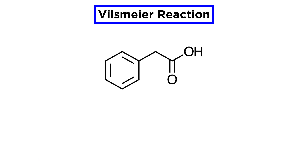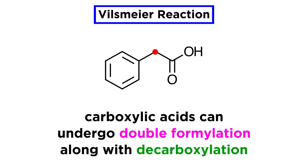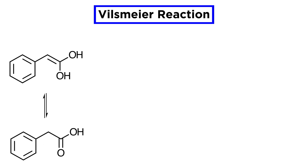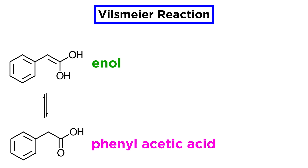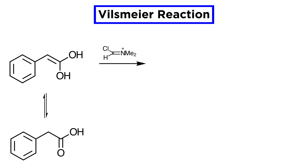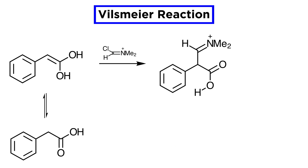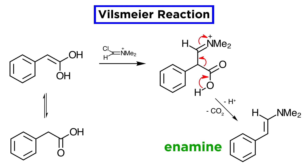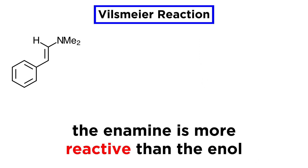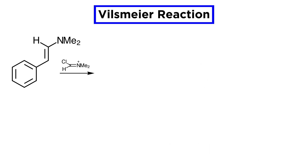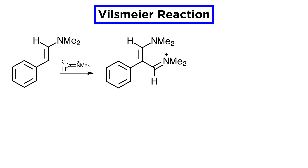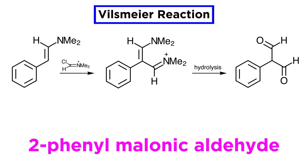Finally, we can examine the situation involving carboxylic acids. Since carboxylates have an alpha-methylene group, a double formylation with accompanying decarboxylation is observed. The enol of phenylacetic acid is probably the active nucleophile. Reaction with the Vilsmeier reagent leads to the expected iminium ion, which decarboxylates easily under acidic conditions, leading to the highly conjugated enamine. This intermediate is quite nucleophilic — in fact more so than an enol — so it reacts again with the Vilsmeier reagent to yield a mixed iminium-enamine product, which can be isolated if necessary. However, in situ hydrolysis leads to 2-phenyl-malonic aldehyde, which can react in interesting ways with a number of reagents.